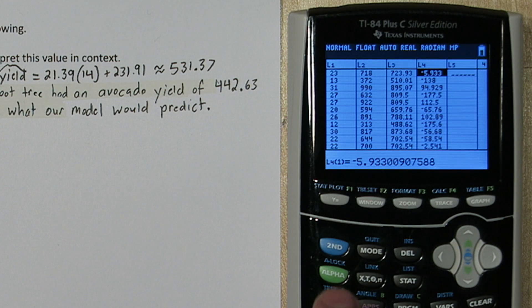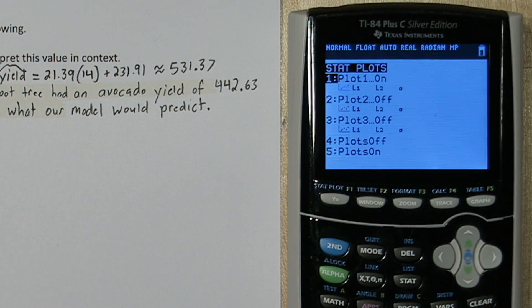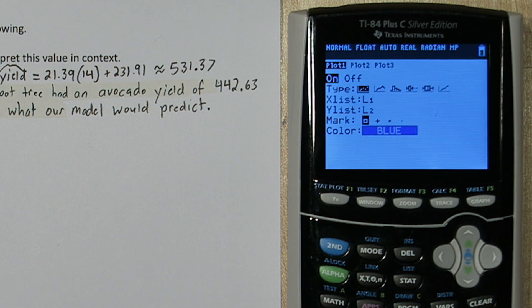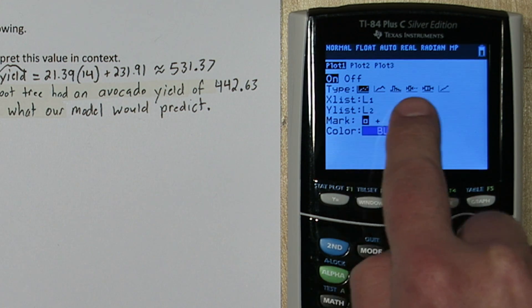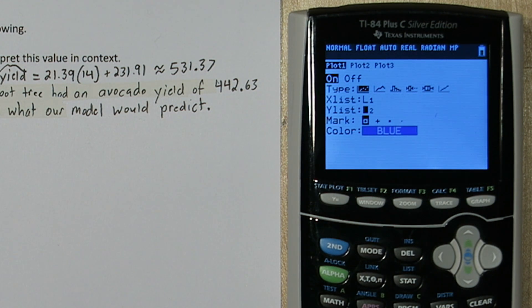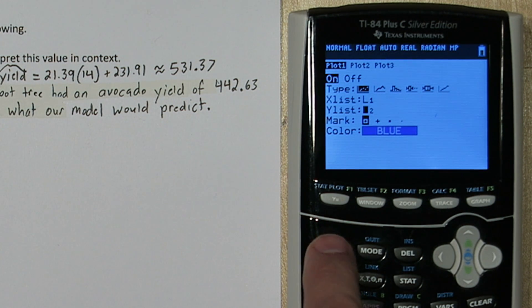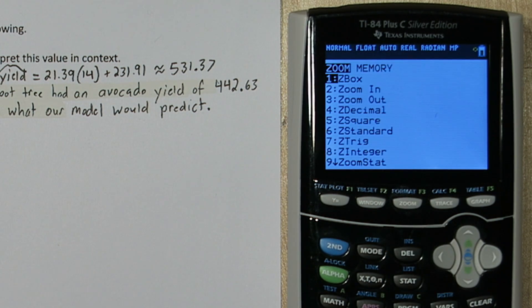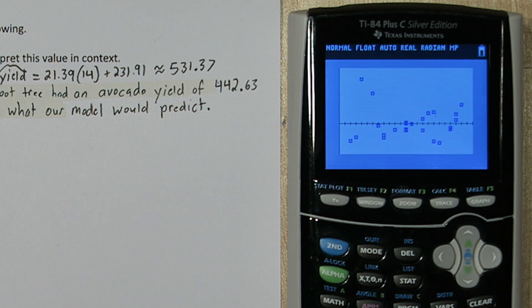Now let's make the residual plot. I'm going to press second and y equals to get to the stat plot menu, and I'm going to press enter on plot 1. On a residual plot, the x-axis is going to be our explanatory variable. So in this case, it's tree height. So we'll leave list 1 there. Our vertical axis is going to be the residual. So I'm going to change this to list 4, which is where our residuals are stored. Now if I press zoom, and then the number 9, here's my residual plot.